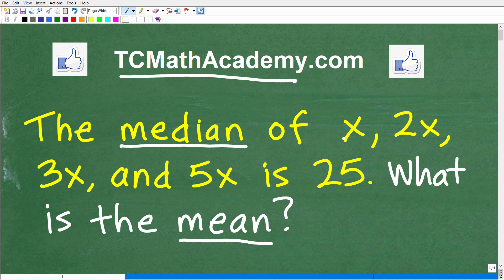It says the median of x, 2x, 3x, and 5x is 25. And the question is, what is the mean?